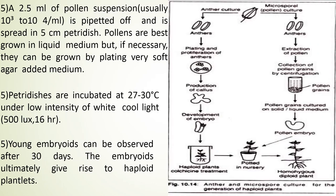The supernatant containing fine debris is discarded and the pellet of pollen is suspended in fresh liquid medium, washed twice by repeated centrifugation and resuspension. 2.5 ml of pollen suspension, usually 10³ to 10⁴ per ml, is pipetted off and spread in a 5 cm petri dish. Pollen are best grown in liquid medium, but can also be grown by plating in very soft agar medium. Petri dishes are incubated at 20 to 30°C under low intensity white cool light. Young embryoids can be observed after 30 days, and these embryoids ultimately give rise to a haploid plantlet.